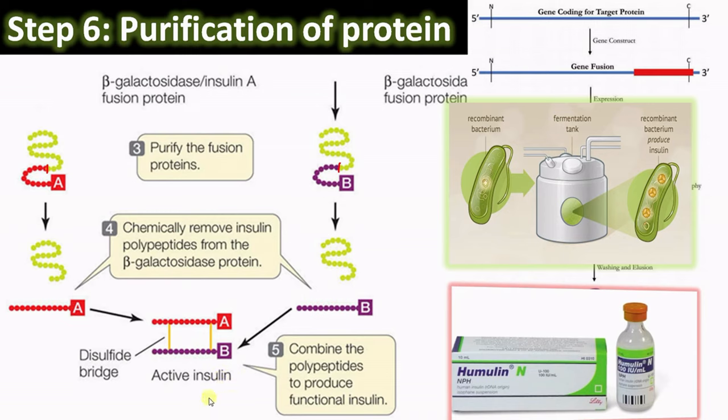The purified A chain and B chain are then mixed in vitro under appropriate conditions to form the disulfide bond, finally forming the active insulin. In large fermentation tanks these protein chains are produced, further purified, and marketed as humulin. Recombinant insulin was first developed by Genentech, a company located in the USA.